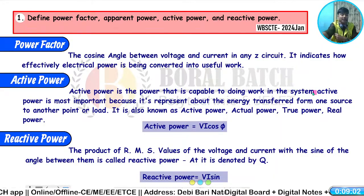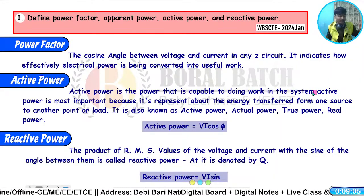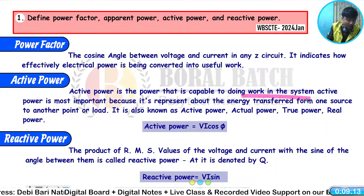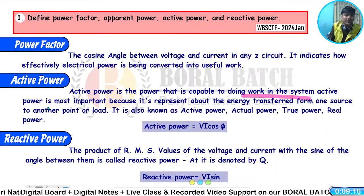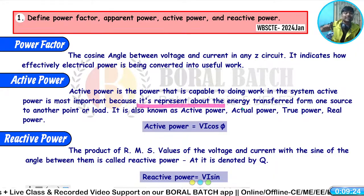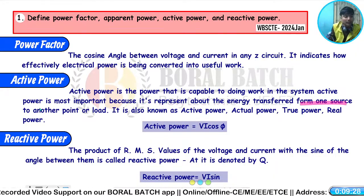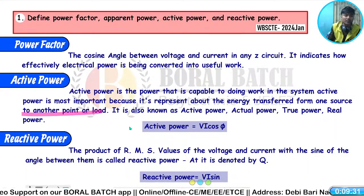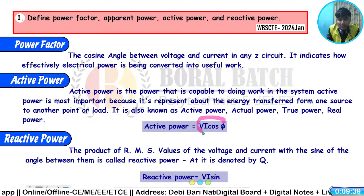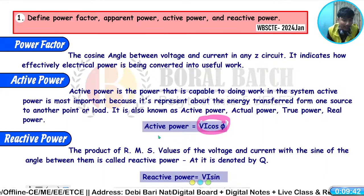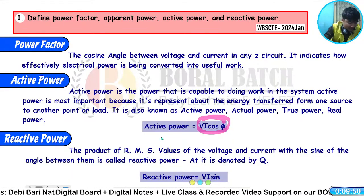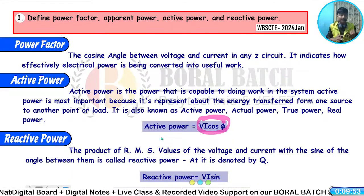Active power is the power that is capable of doing work in the system. Active power is the most important because it represents the energy transferred from one source to another point or load. Active power, actual power, true power, or real power — the formula is P = VI cos φ.